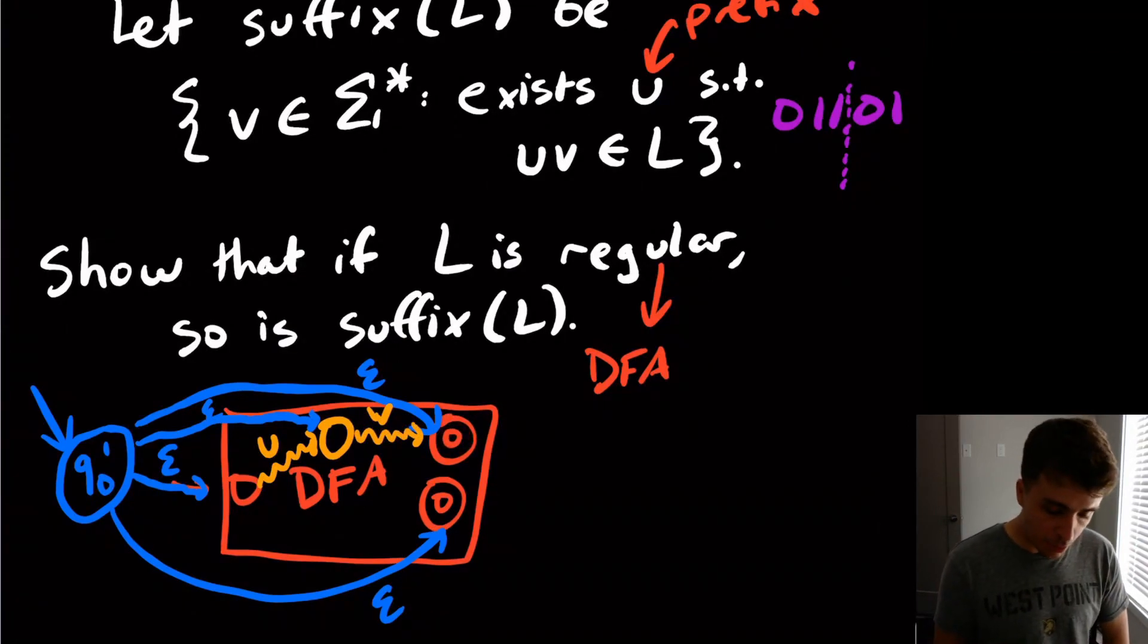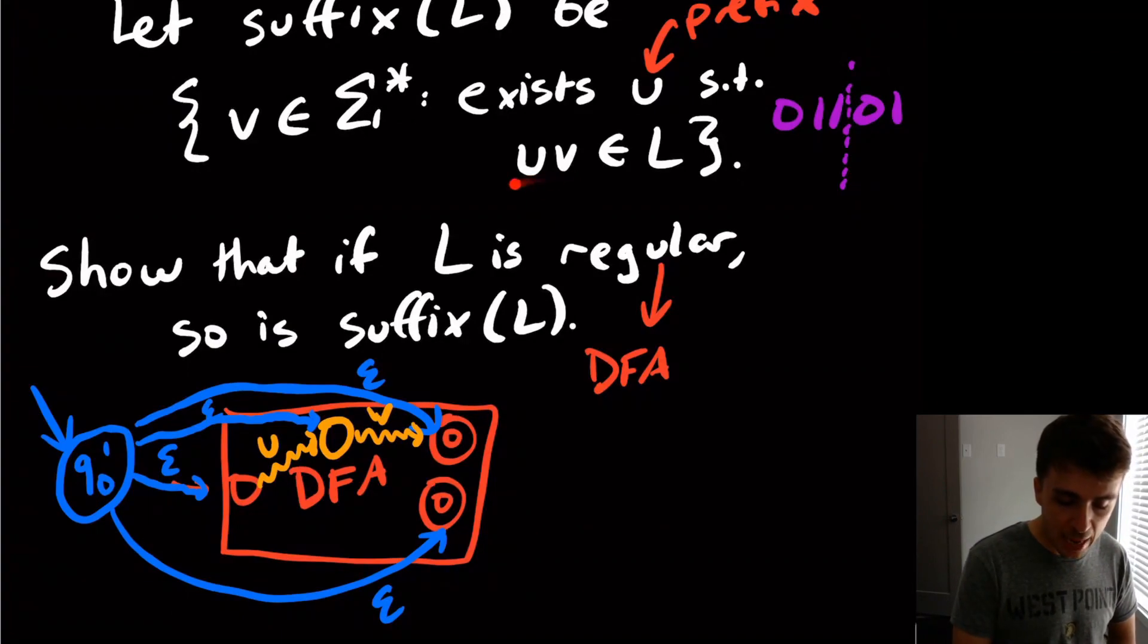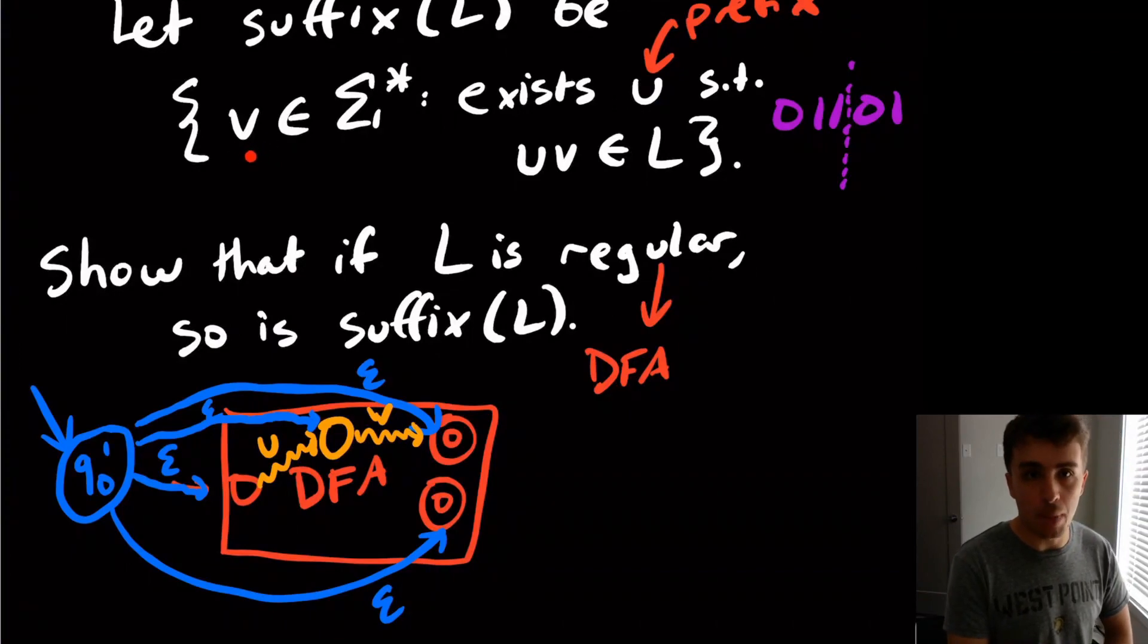So therefore, if we have a string like this in the language, we will recognize all possible suffixes, because these transitions will go to every single one of the possible states in here.